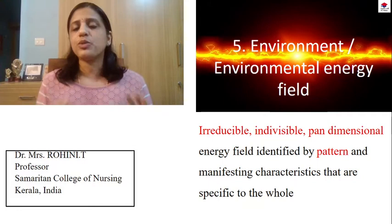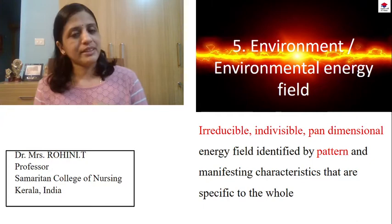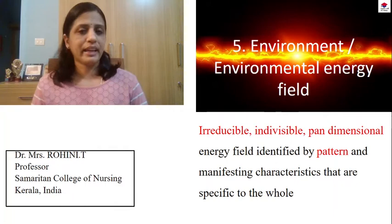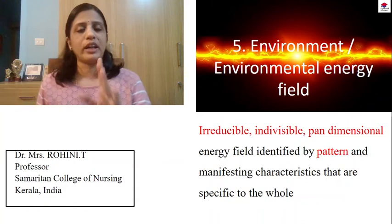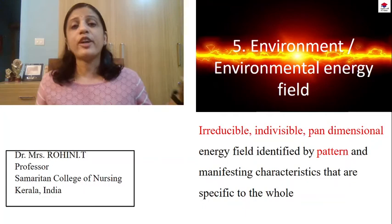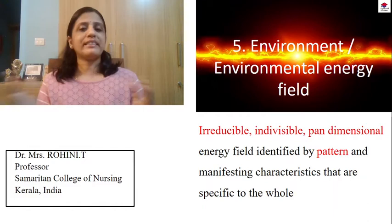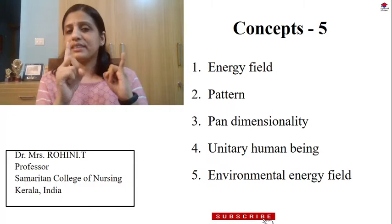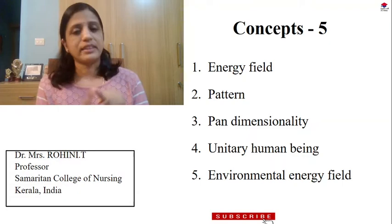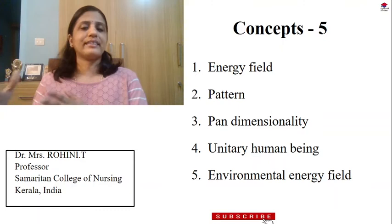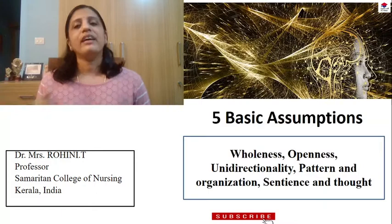Concept number 5 is environmental energy field. The same words you write for unitary human being apply here: irreducible, indivisible, pandimensional, having a pattern, and interacting with the unitary human being. The ratio of a person to the environment is 1 to 1. If I have a pandimensional energy field, the environment also has a pandimensional energy field. I am indivisible and irreducible — and so is the environment. You cannot reduce it, and it is always interacting with the unitary human being. So the 5 concepts are: energy field, pattern, pandimensionality, unitary human being, and environmental energy field.